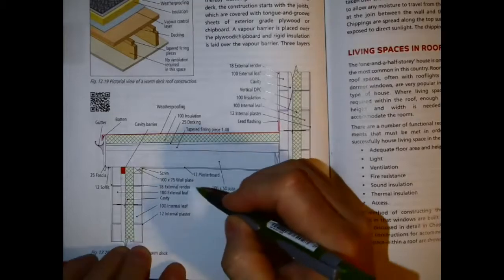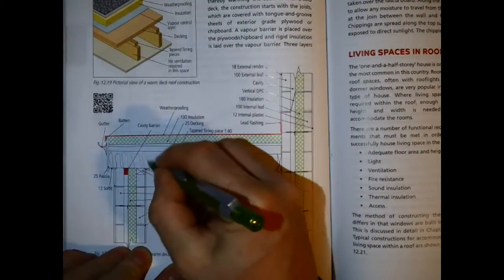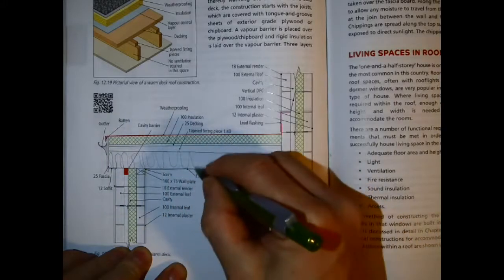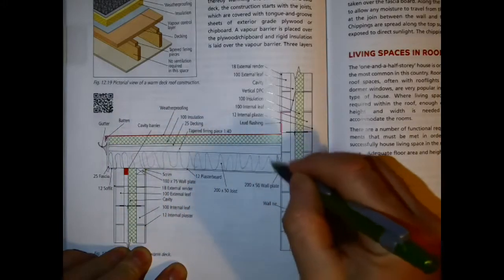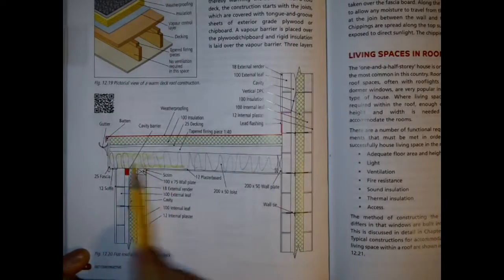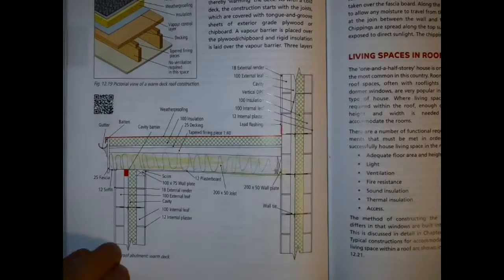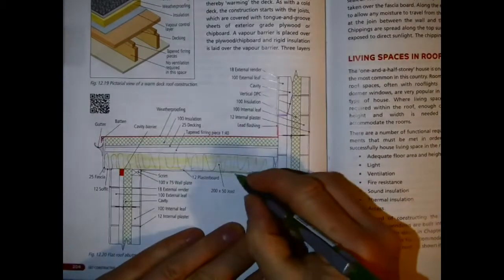The cold deck would have this area here filled with insulation, with ventilation provided above. In the warm deck there's no vent placed at the soffit.